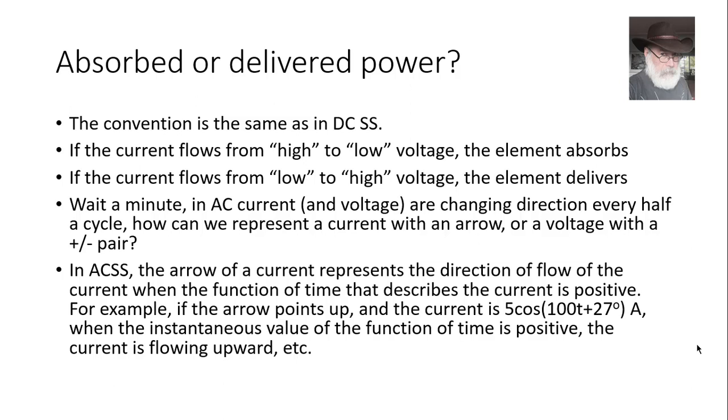In an example, let's say the arrow is pointing up and the current is 5 cosine of 100t plus 27 degrees. Those are amperes. At any point in time, if I evaluate that cosine and I get a positive number, the current at that point in time is actually flowing up. And the opposite is also true.